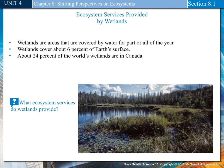Ecosystem services provided by wetlands: Wetlands are areas covered by water for part or all of the year, covering about 6% of the Earth's surface. About 24% of the world's wetlands are in Canada. Wetlands store water, which reduces the risk of flooding, and provide habitat for commercially important species of fish and shellfish. Plants, turtles, snakes, mink, and thousands of other organisms live in wetlands. For juvenile animals, wetlands are a protective environment in which they can grow and develop. Every spring and fall, migrating birds use wetlands to feed and rest — about 30% of birds in North America stop in wetlands throughout Canada.